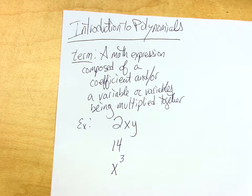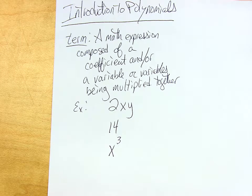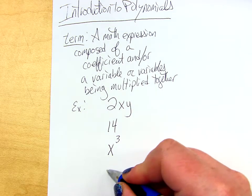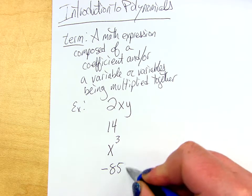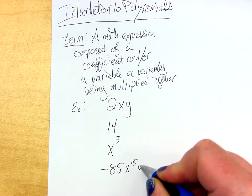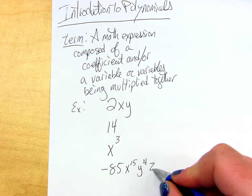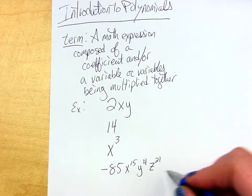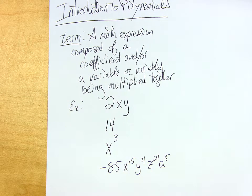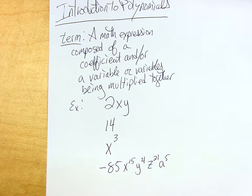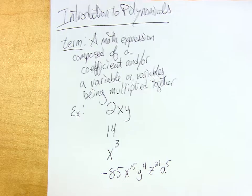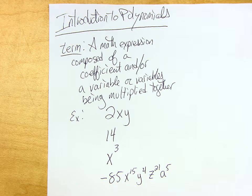Does that make sense? And they could be raised to all different variables, so let's do one more weird one. Say I had something like, oh, I don't know, negative 85, x to the 15th, y to the 4th, z to the 21st, a to the 5th. That would count as one term. It's all being multiplied together. Does that make sense so far?